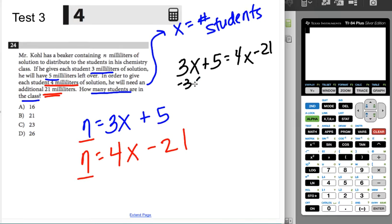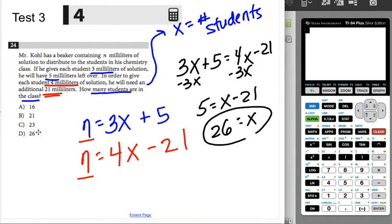I'm going to move all my x's to the right-hand side in this case because it gives me a positive one. So I'm going to get five equals x minus 21. So 26 is my x, which is answer D.